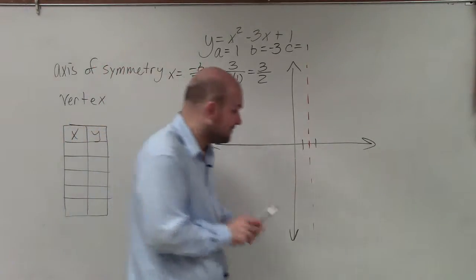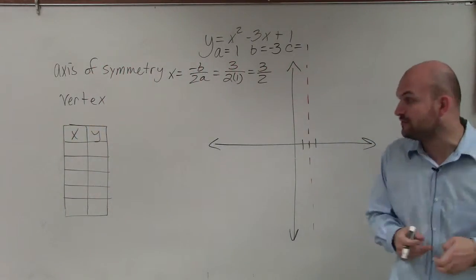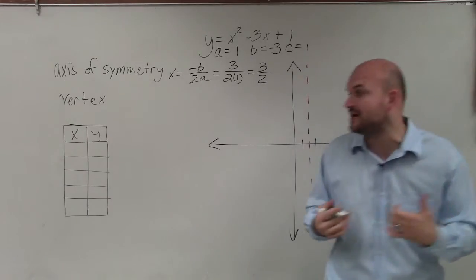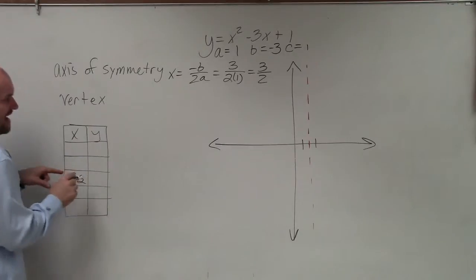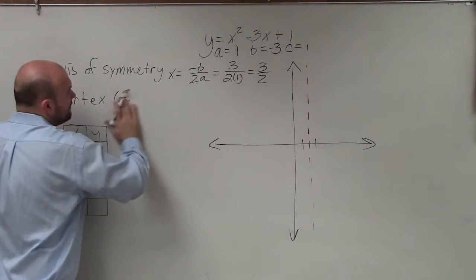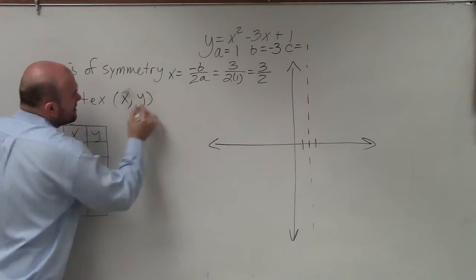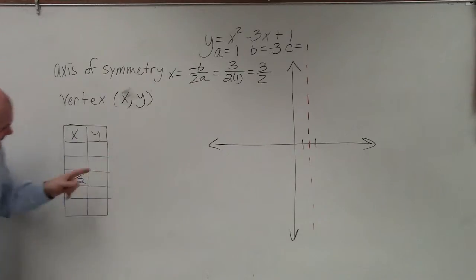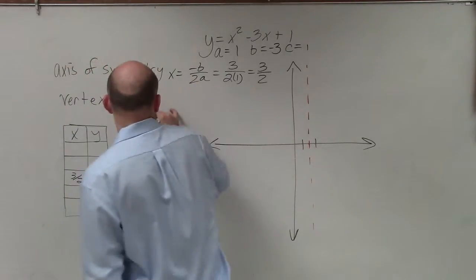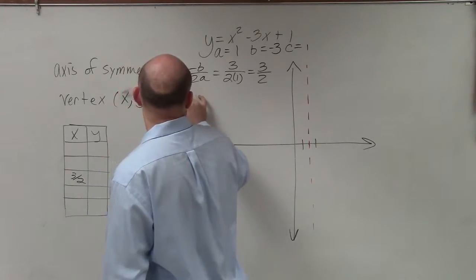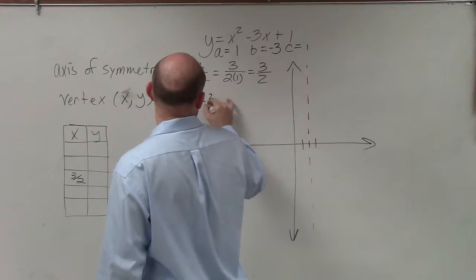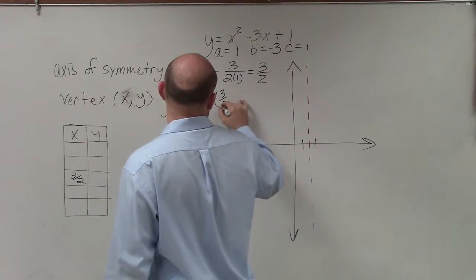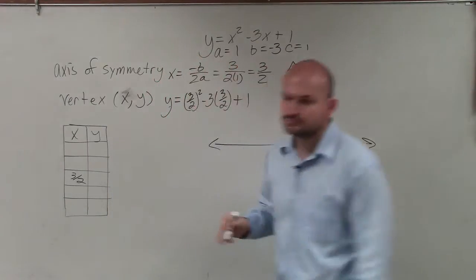Now yes, I do understand the difficult part now is identifying the vertex. Because what we talked about to identify the vertex was to plug in the x value and define the y value. Because remember, the vertex is a coordinate point, it's an x and a y. So we have the x value is 3 halves. Now we need to figure out the y value. So to do that, I say y equals 3 halves squared minus 3 times 3 halves plus 1.